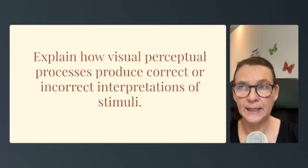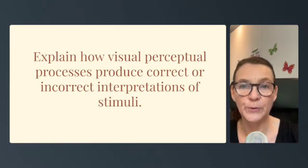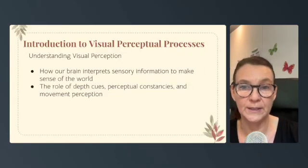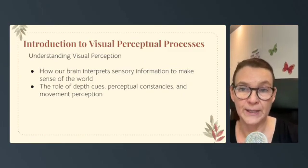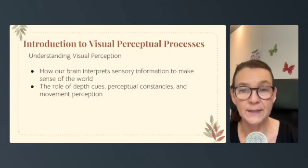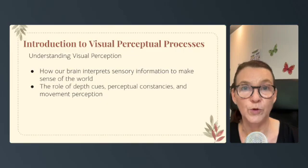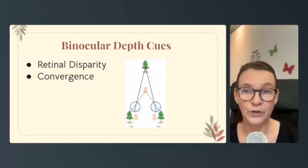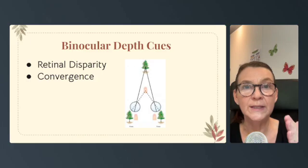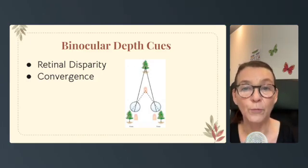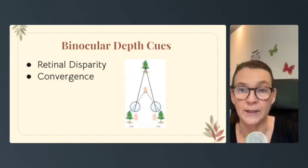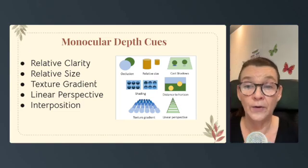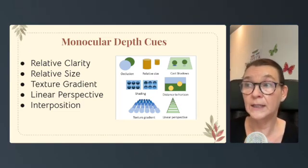For 2.1 Perception, there's a second CED question: explain how visual perceptual processes produce correct or incorrect interpretations of stimuli. We need to understand how the brain interprets sensory information through depth cues, perceptual constancies, and movement perception. Starting with binocular depth cues — retinal disparity is the difference between images seen by each eye, and the brain uses these differences to perceive depth. Convergence is when the brain merges images from each eye to create a single 3D perception. Monocular depth cues include relative clarity (distant objects appear hazier), relative size (larger objects appear closer), texture gradient (fine details more visible up close), linear perspective (parallel lines seem to converge in the distance), and interposition (closer objects block the view of those behind them).